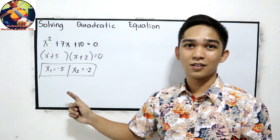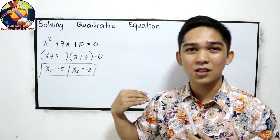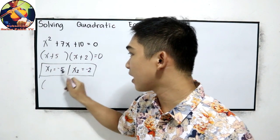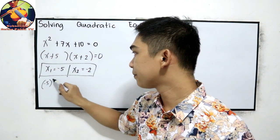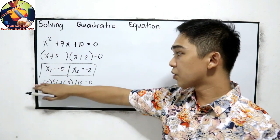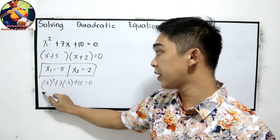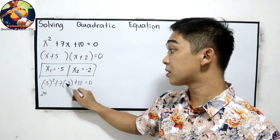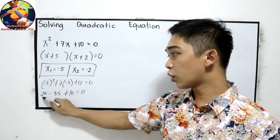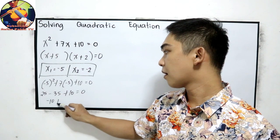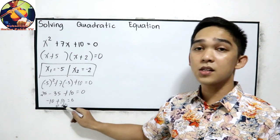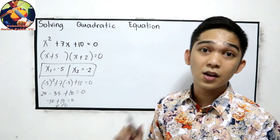To check — someone asked in the comment section how to verify the answer. All you need to do is substitute the value of x. Let's use negative 5: negative 5 squared plus 7 times negative 5 plus 10 equals 0. This expression must equal 0. Negative 5 squared is positive 25; 7 times negative 5 is negative 35; plus 10. So 25 minus 35 is negative 10, plus 10 equals 0. Negative 10 plus 10 gives 0 equals 0, so your answer is correct.